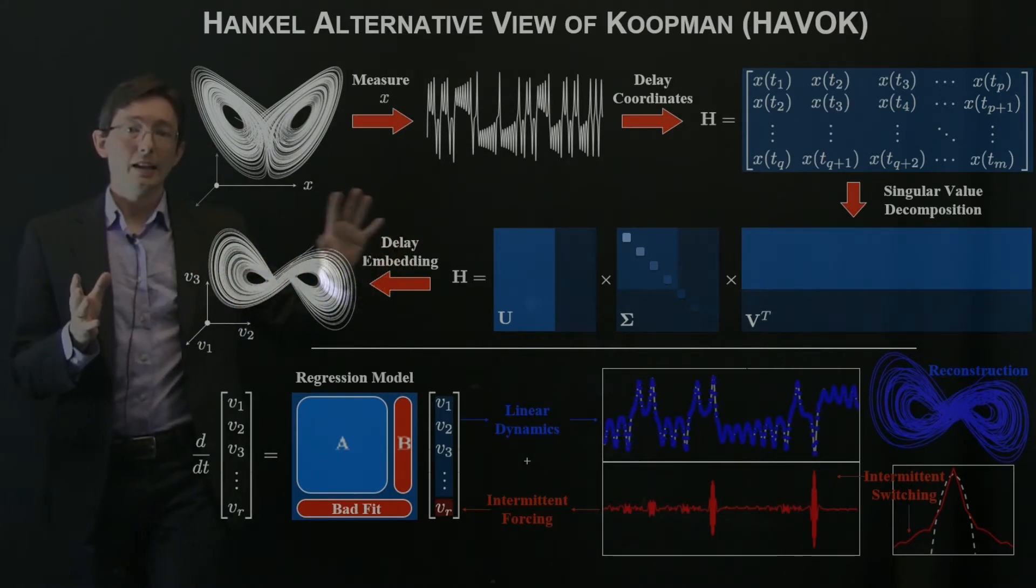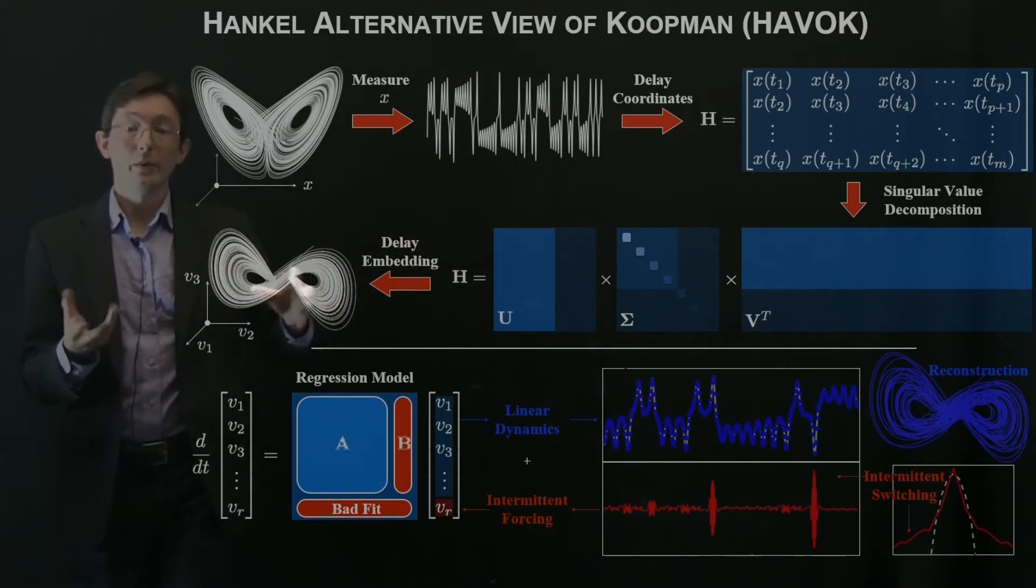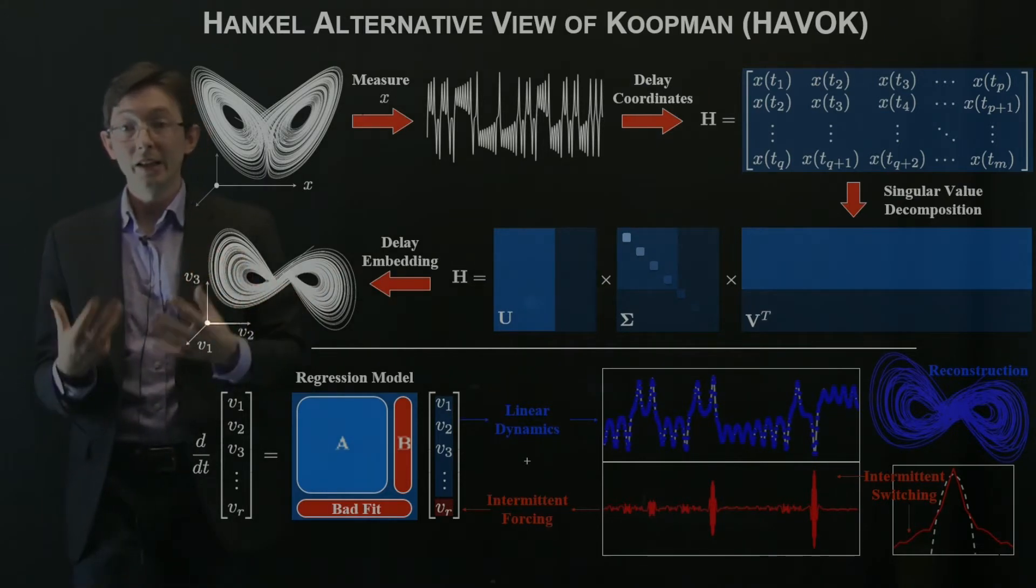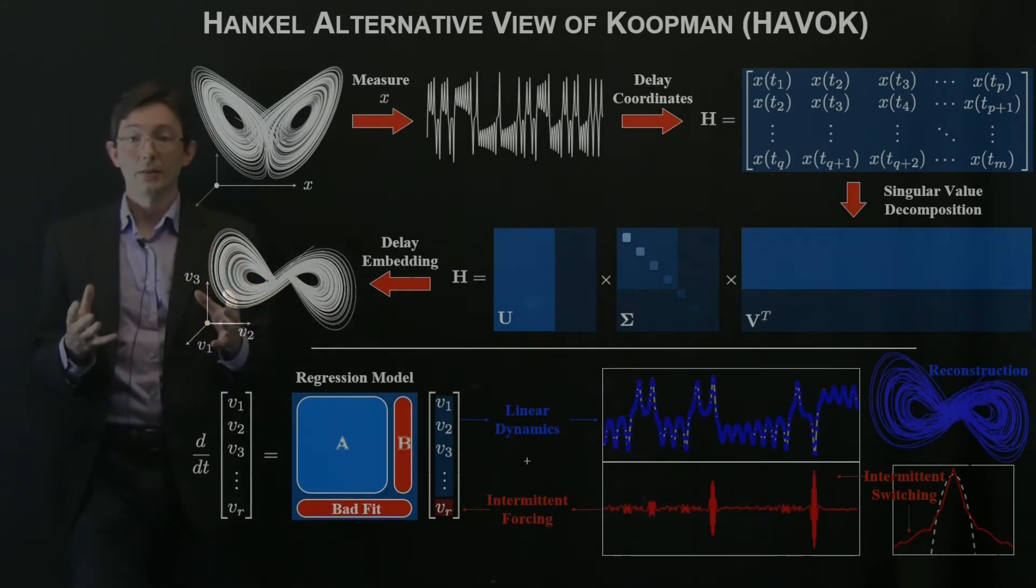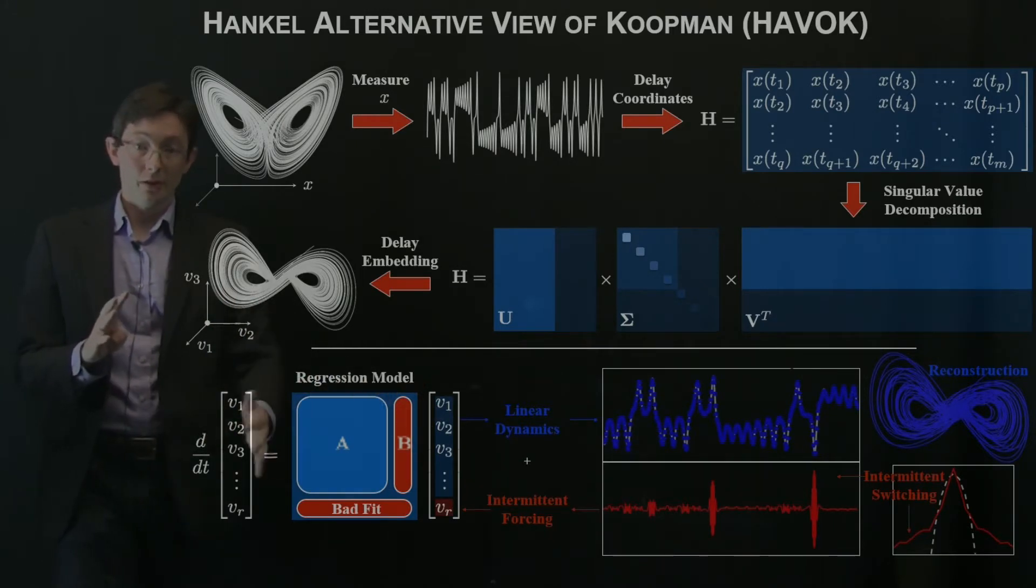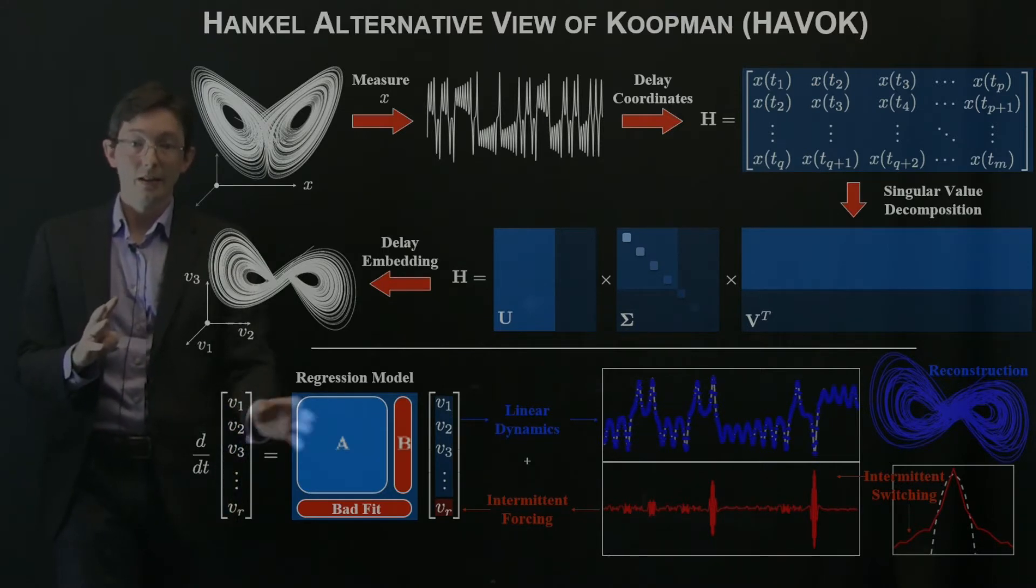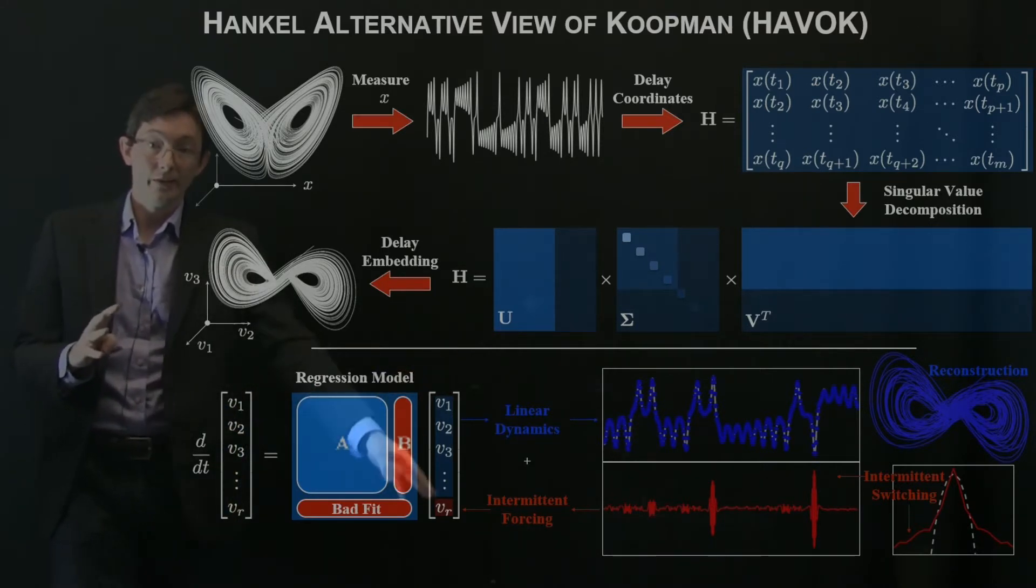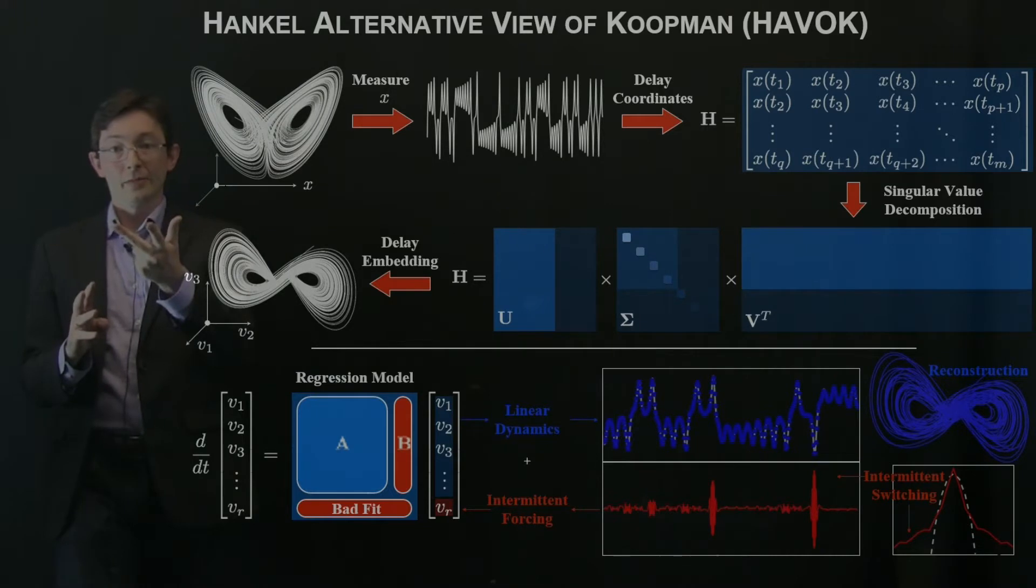And what that means is that in these eigentime delay coordinates, we actually have some hope of getting a linear model, a linear representation of the dynamics. And so what we do is we build this linear regression model from all of the V coordinates. So V dot equals this linear operator times V, where V are these eigentime delay coordinates.